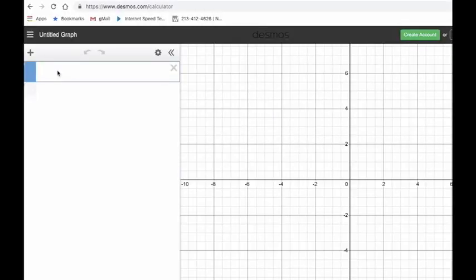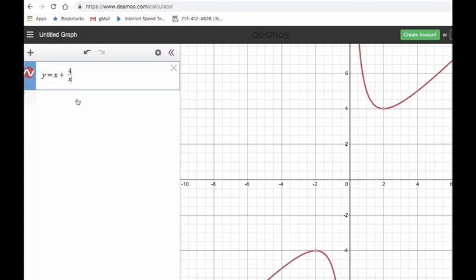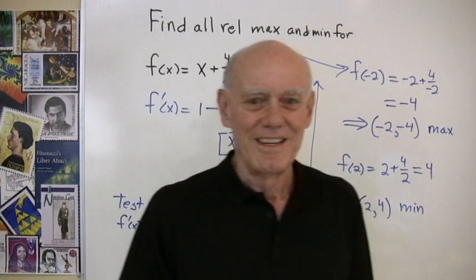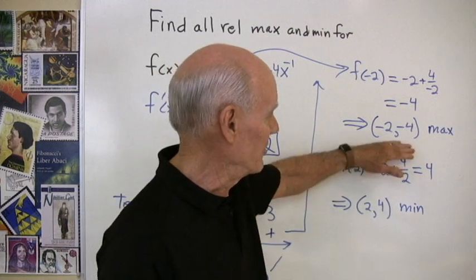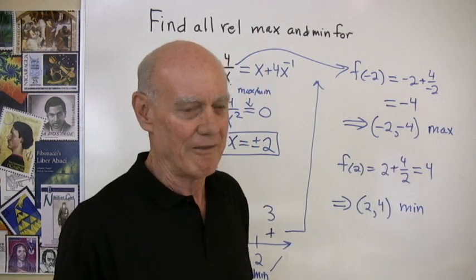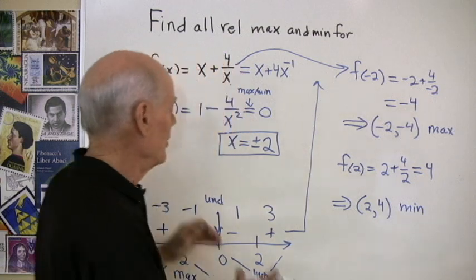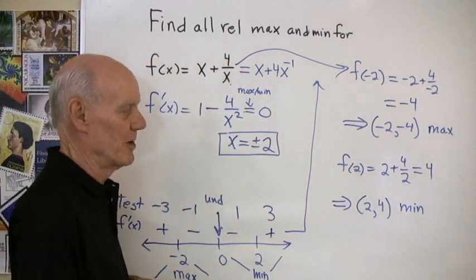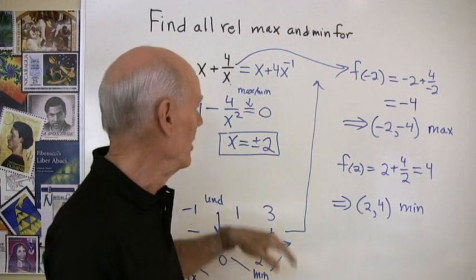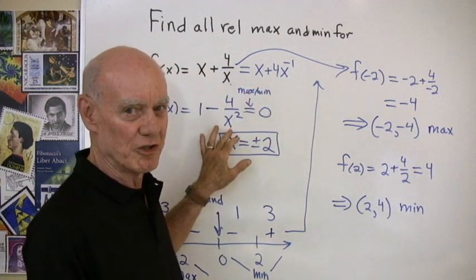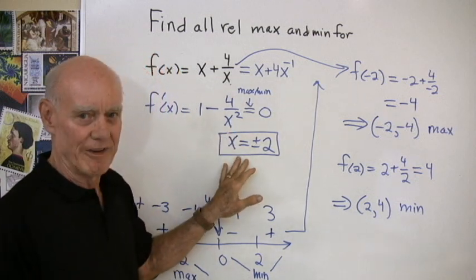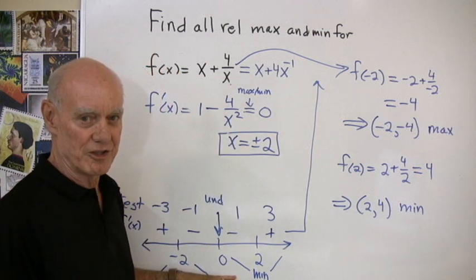I'm going to put in the equation y equals x plus 4 over x, and there you can see that we have a relative minimum at the point 2, 4, and a relative maximum at the point negative 2, negative 4. So as you can see, these values that we've got do correspond to what we get when we graph this function. This is a very common problem in first semester calculus. You want to be good at this kind of problem. Make sure you can find these critical values of x quickly and that you can draw this chart. Thank you.